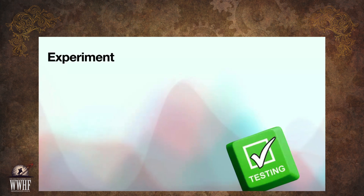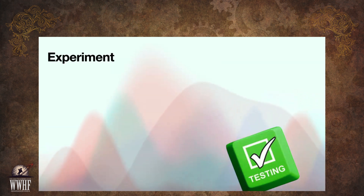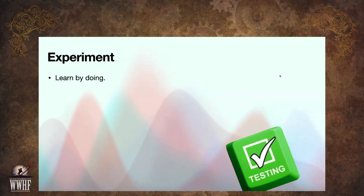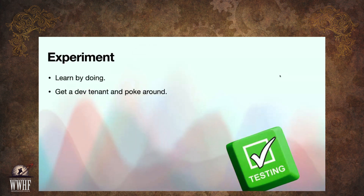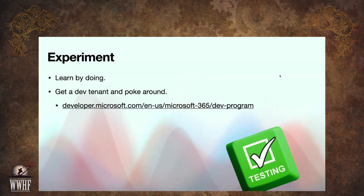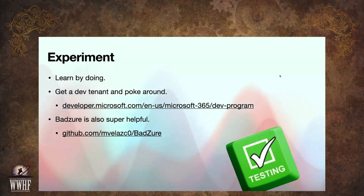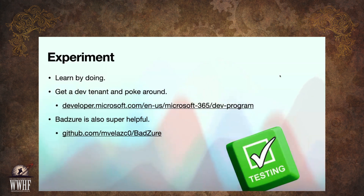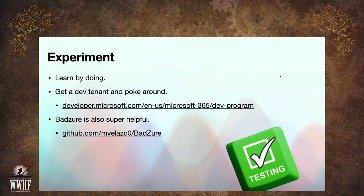We've got to experiment, because there's a difference between knowing something and actually being able to execute it. You can get a dev tenant from Microsoft with E5 licensing — I encourage you to get one and poke around, see what you can break, see what you can implement. Another really cool resource is something called Badger, which uses Terraform to set up an Entra ID tenant with all these security misconfigurations. If you're focused on offensive security, try to attack that tenant. If you're a defender, try to correct all the misconfigurations.